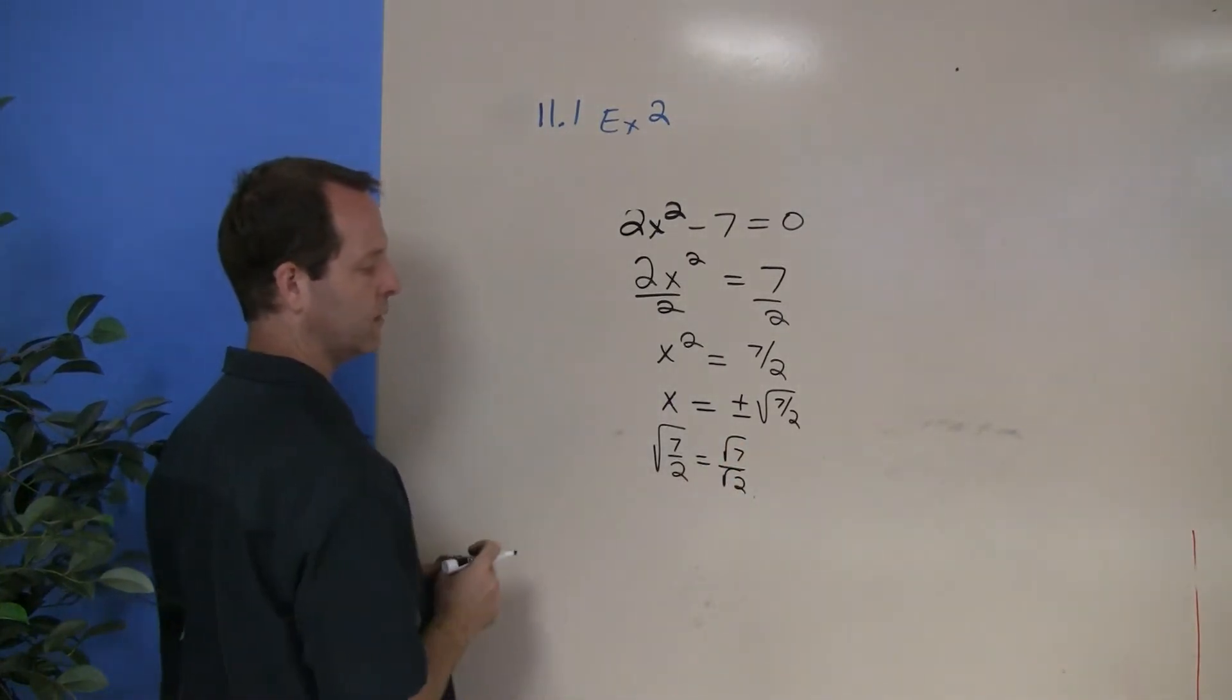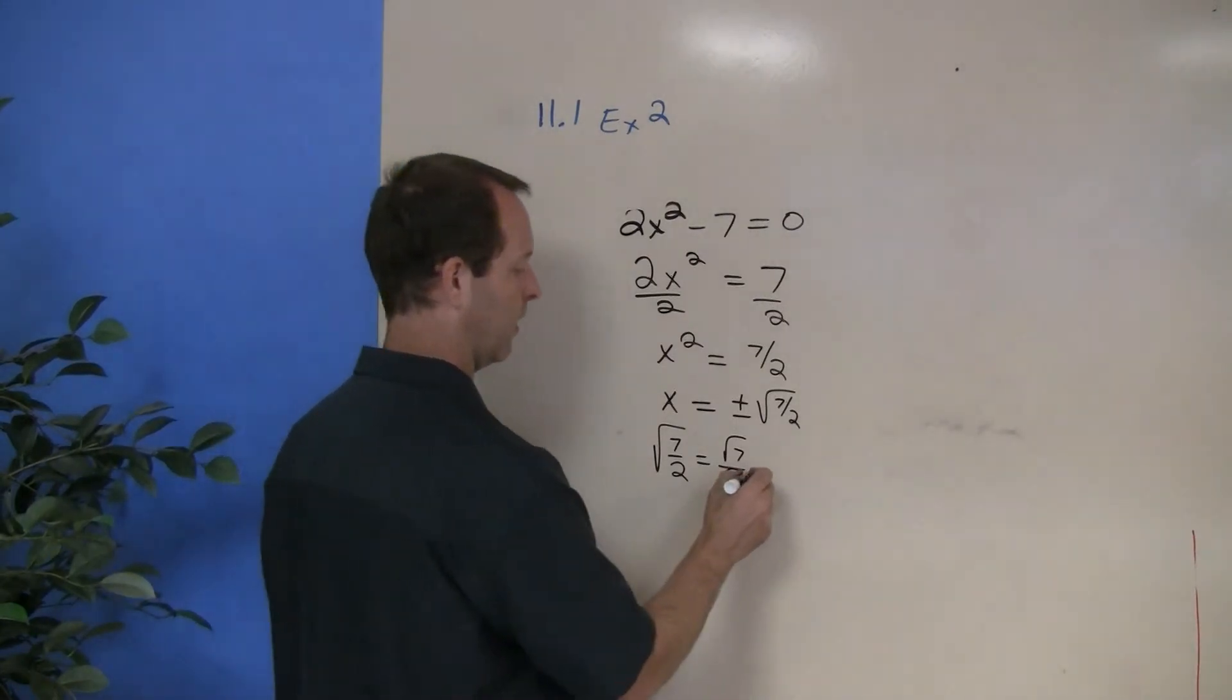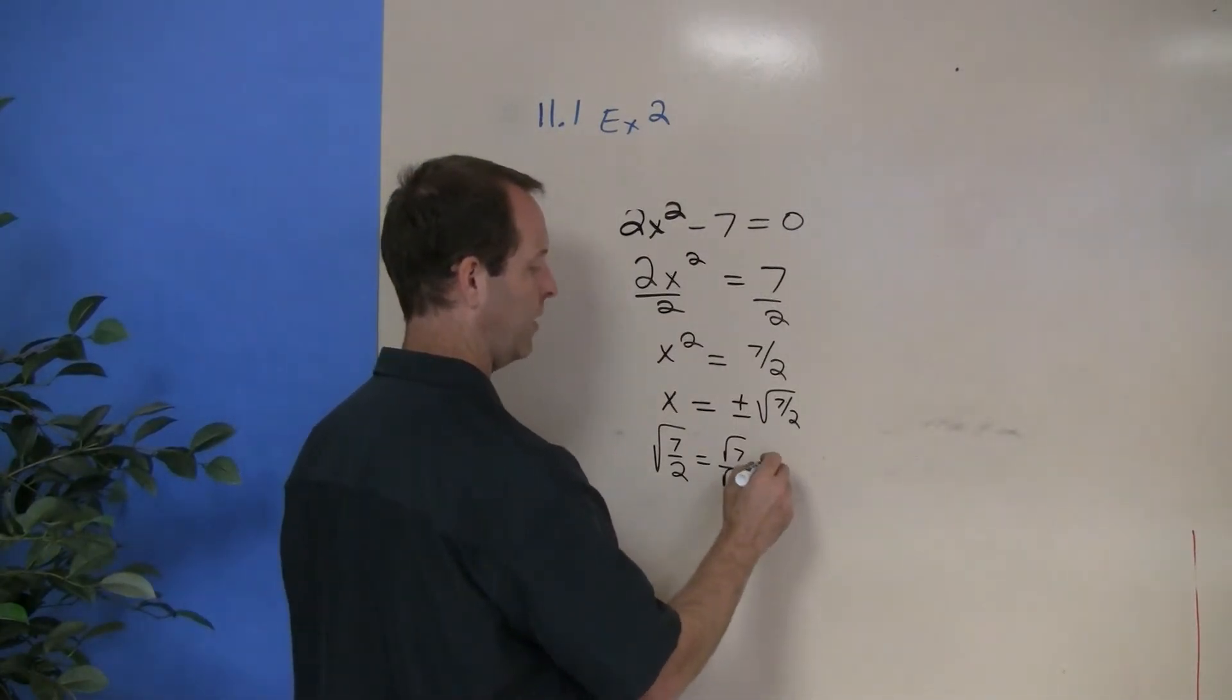To remove that square root of 2 in the denominator, I'm going to multiply by a clever version of 1, which in this case is the square root of 2 over the square root of 2.